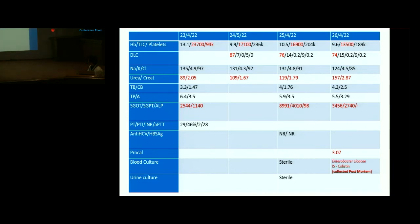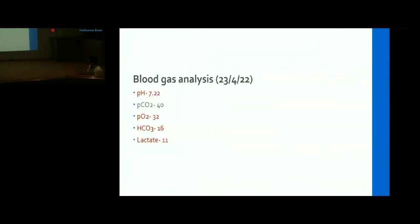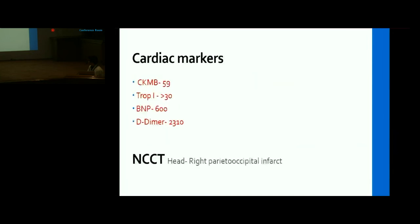Blood gas analysis showed mixed acidosis — both metabolic and respiratory. Cardiac markers: CKMB raised to 59, troponin more than 30, BNP 600, D-dimer 2310. NCCT showed right parieto-occipital hypodensity.